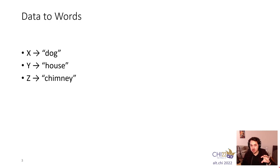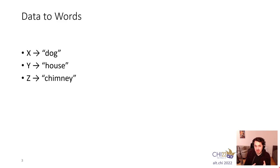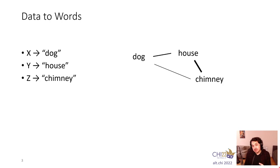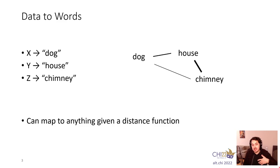Consider these three points. What if I told you that the similarity between these points is like the similarity between the words dog, house, and chimney? Already you probably have some idea of what that might be. House and chimney sound quite similar — chimney is part of a house. Dog and house maybe somewhat, because a dog could live in a house. Dog and chimney probably not so much. So we could represent this with a little diagram using traditional visualization, but we didn't have to, because you already feel and perceive the similarities between the words.